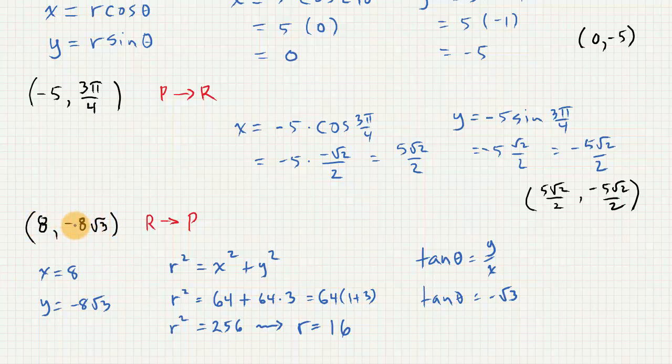So in quadrant 4, that would put us down at 5 pi over 3. So this tells us that theta is 5 pi over 3 by looking at the unit circle.